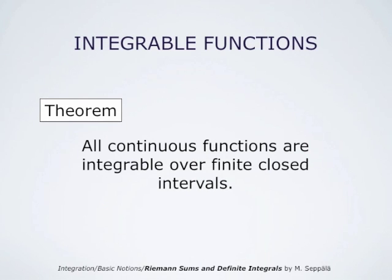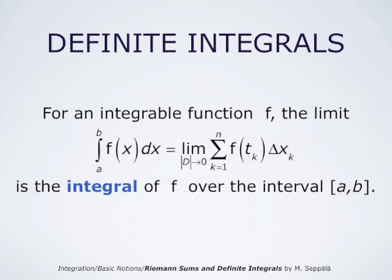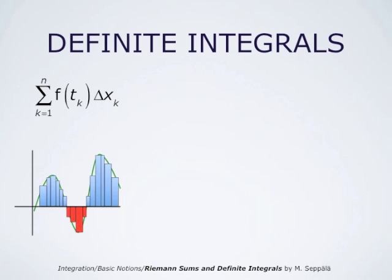One can show that all continuous functions are integrable over finite, closed intervals. For us, this means that the elementary functions of calculus are integrable over intervals on which they take only finite values. And then, if a function is integrable, the limit of the Riemann sums is the integral of this function over the interval from A to B. Graphically, a Riemann sum — summation k from 1 to N of f at tk times Δxk — is the difference of the total area of the blue rectangles and the total area of the red rectangles, as shown in this picture.